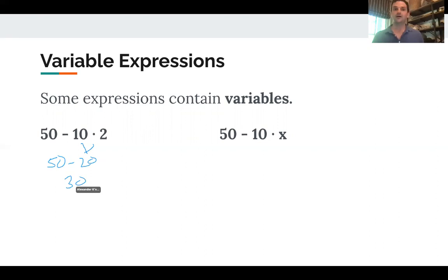So that has a value, but the expression on the right, 50 minus 10 times x, it's not clear what the value of that is because we don't know what the value of x is. x is a variable, which means it represents an unknown number.